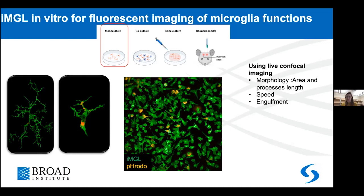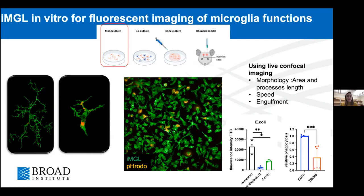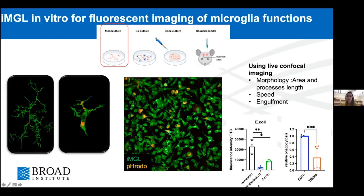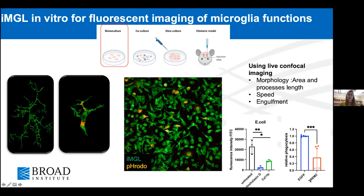We have tested this engulfment assay in multiple conditions by blocking phagocytosis pharmacologically with cytochalasin D or by blocking cell surface receptors. We've also tested it in the context of genetic depletion of TREM2, an essential receptor for phagocytosis. When we delete TREM2, we can see that phagocytosis decreases drastically, validating the assay.